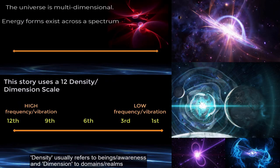The Universe is multi-dimensional and energy forms exist across a spectrum. This story uses a 12-density dimension scale, from high-frequency 12th density to low-frequency 1st density. Density usually refers to beings or awareness, and dimension to domains or realms.